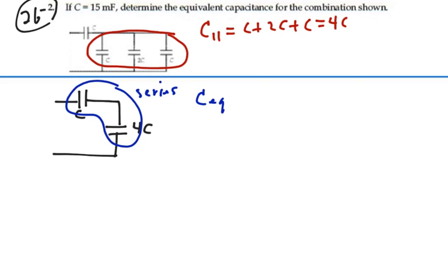we can say immediately our C equivalent is product over the sum. So we have C times 4C over C plus 4C. This is equal to 4C squared over 5C. We'll have 4 fifths or 0.8C left over because one of the C's cancels out.